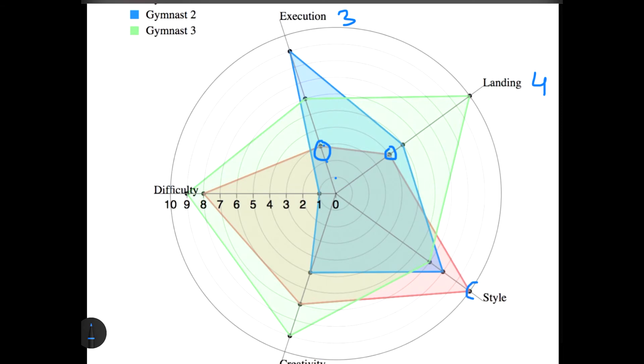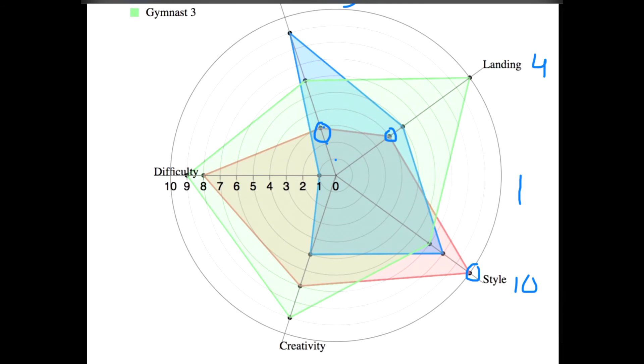If I just follow the red one over here in style, it's 10. And if I go and check it out for creativity, then for creativity we can see that the score is 10, 9, 8, 7. So the score of creativity is seven.